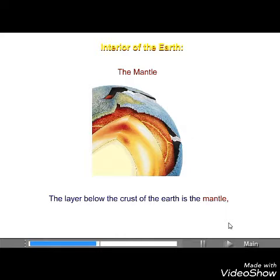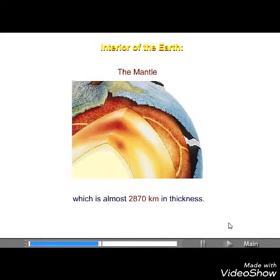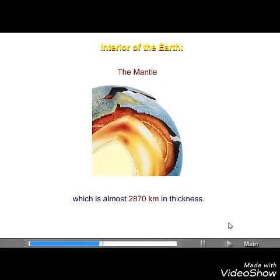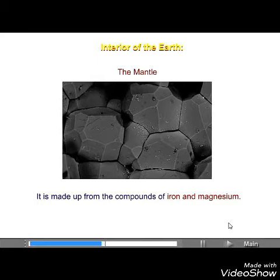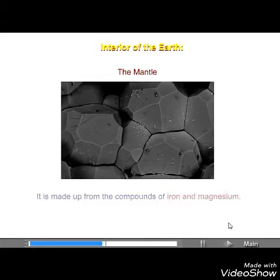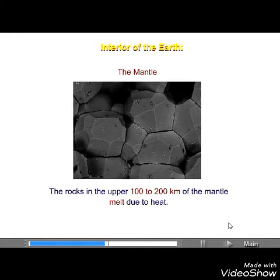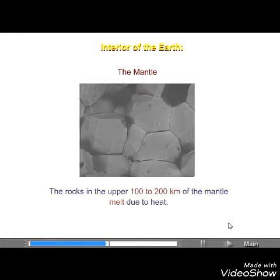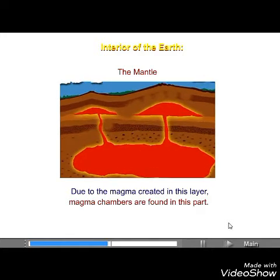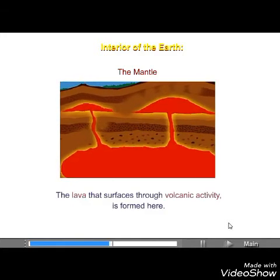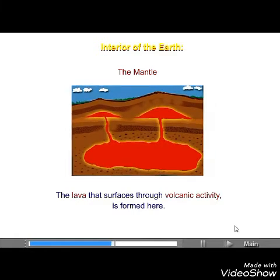The mantle — the layer below the crust of the earth — is almost 2,870 km in thickness. It is made up of compounds of iron and magnesium. The rocks in the upper 100 to 200 km of the mantle melt due to heat. Due to the magma created in this layer, magma chambers are found in this part. The lava that surfaces through volcanic activity is formed here.